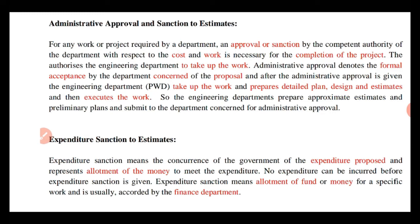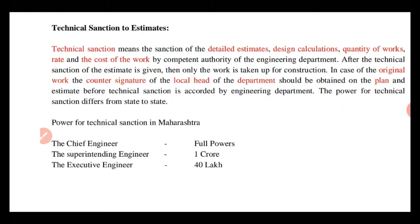Administrative approval के साथ जो preliminary estimate दिया जाता है उसमें एक approximate cost होती है। उसके लिए fund available है या नहीं, यह finance department देखता है। Expenditure sanction का मतलब है किसी specific work के लिए fund या money का allotment, और इसकी availability finance department check करता है।